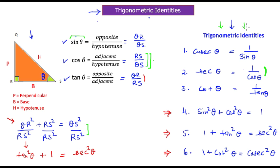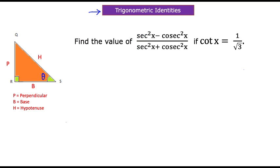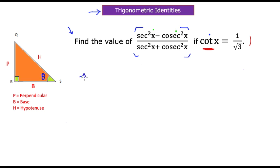Let's look at an example. We need to find the value of (sec²x − cosec²x) / (sec²x + cosec²x). The only information given is that cot x = 1/√3. The first target is to find the value of sec²x.